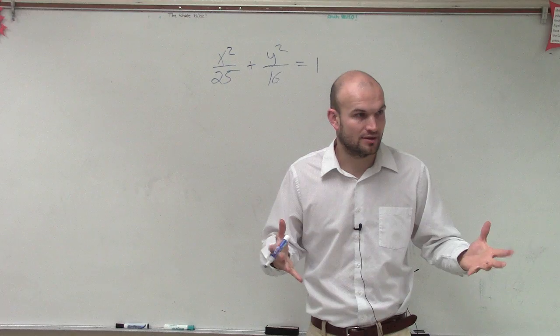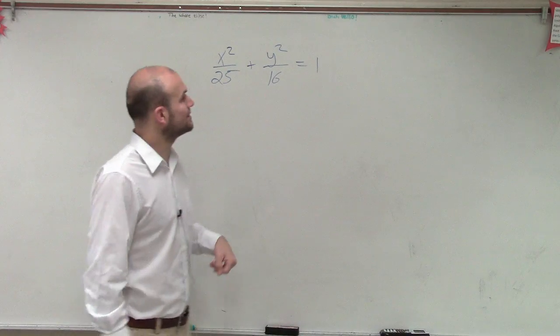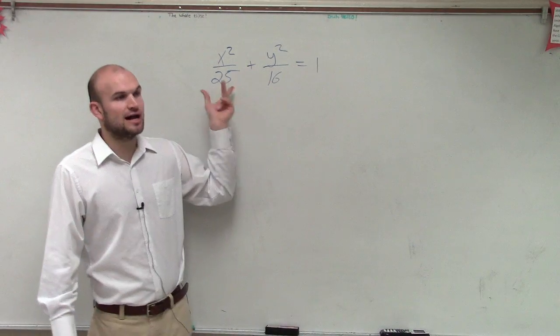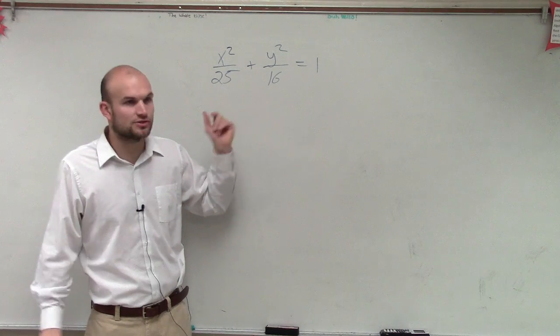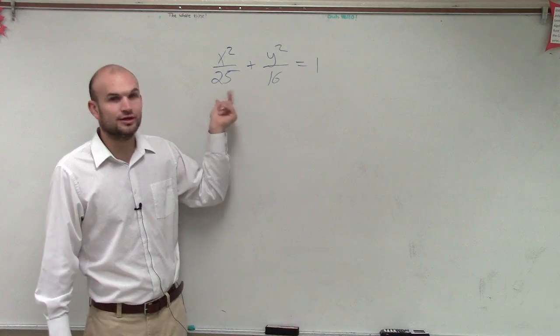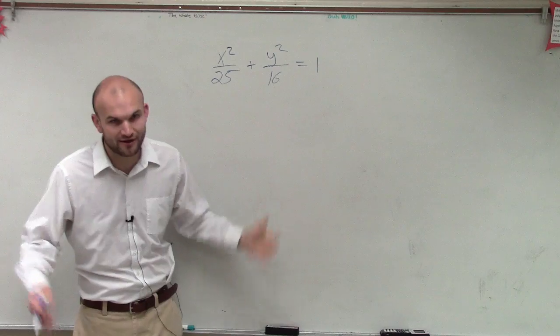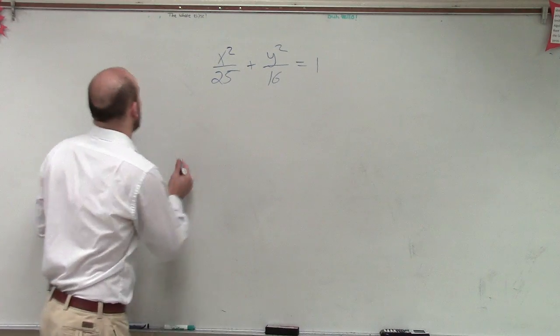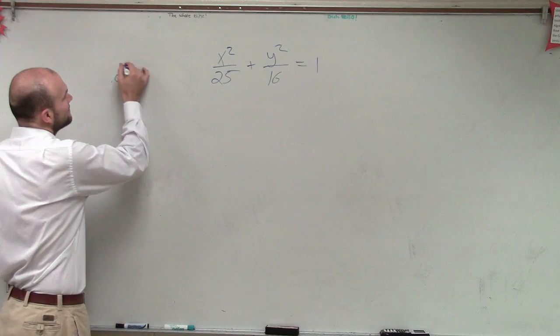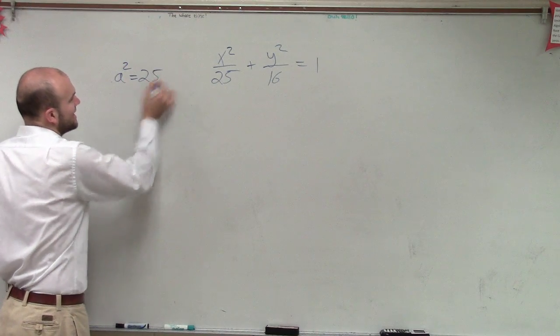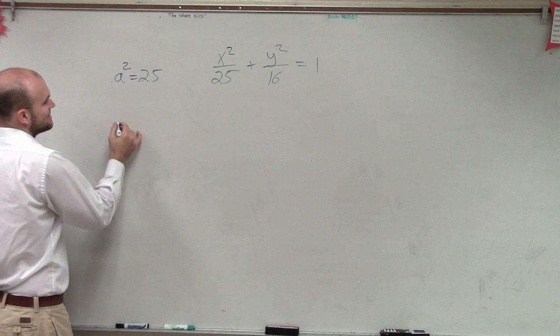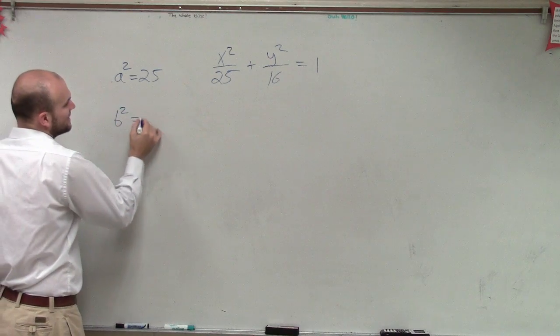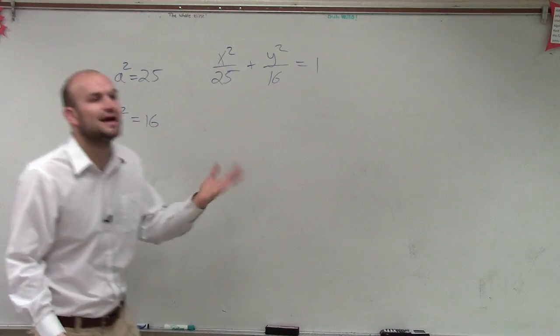A. A is, right? So what I want to do is I want to determine out of my two denominators, which one of these is larger than the other? You can look and you say, well, obviously, yes, 25 is larger than 16, right? So what we can have is now I can say that 25 is equal to a squared and 16 is equal to b squared. Does that make sense?